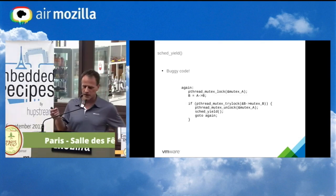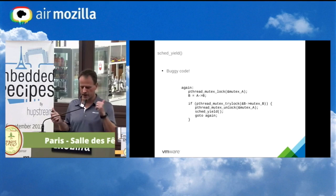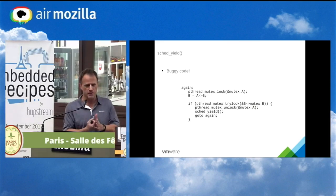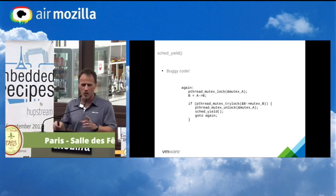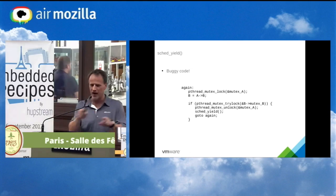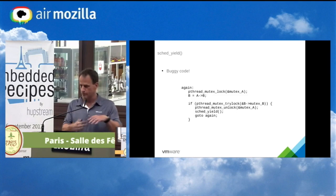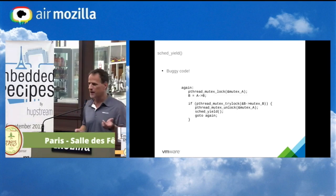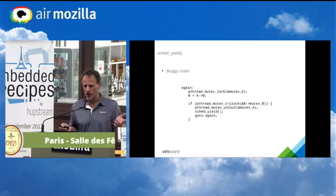I've seen buggy code where someone grabs a mutex and mutex B has to be grabbed before mutex A. You do mutex A, do some work, then try to grab mutex B, and you say 'if I grab it here I could possibly deadlock because somewhere else grabs B and A.' So what they do is try-lock; if they don't get it, release A and call SCHED_YIELD, go again. Unfortunately, if you're a SCHED_FIFO task and you're the highest priority and you preempted the owner of B, you're just going to spin and B is never going to run. That's why it's buggy code.